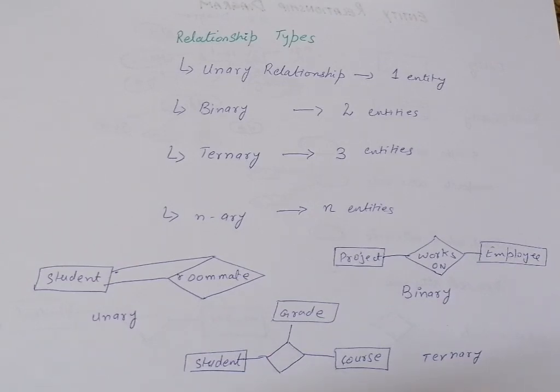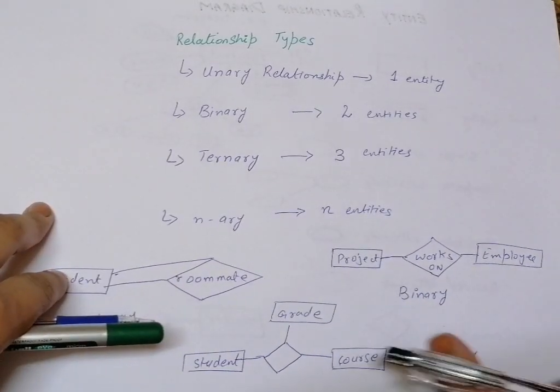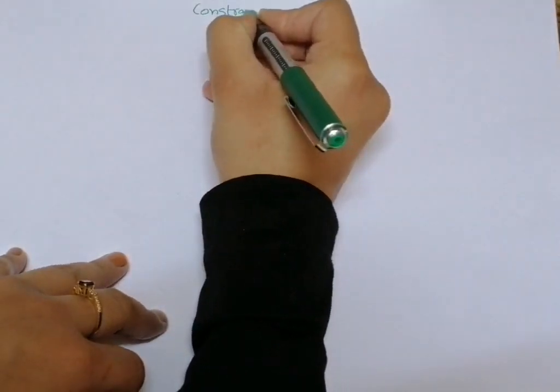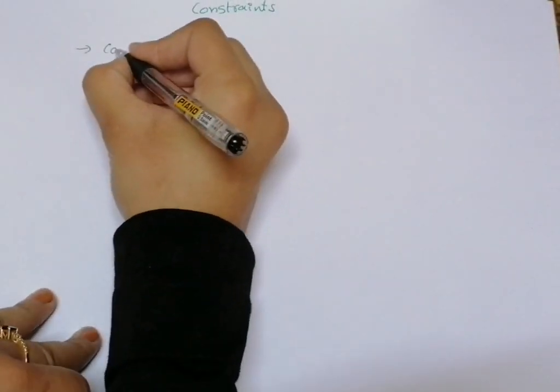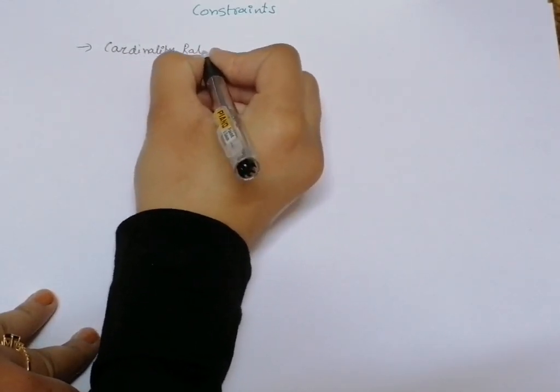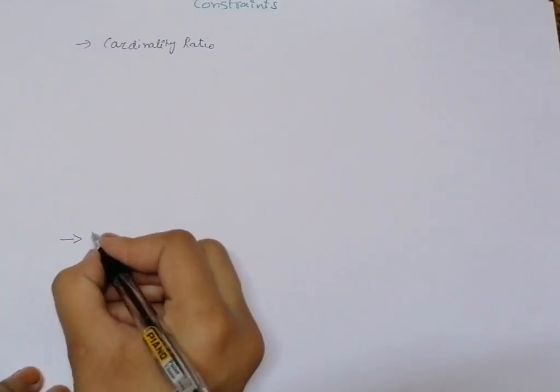When we talk about relationship types, we must not forget about constraints. The constraints applied on a relationship come in two types: number one is cardinality ratio, and the second one is participation constraint.